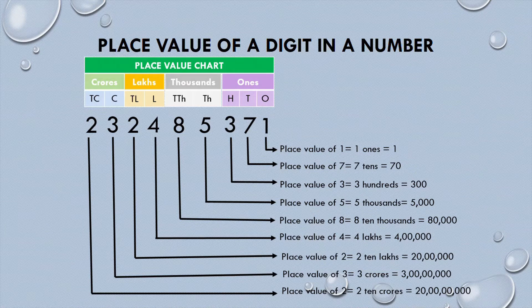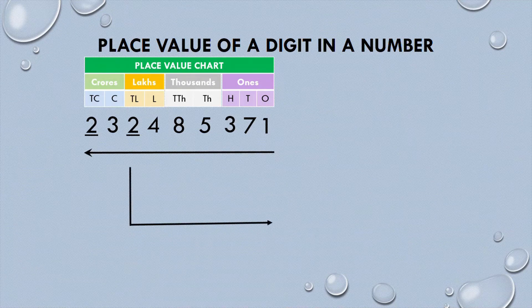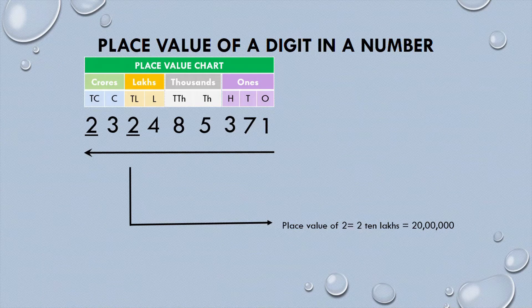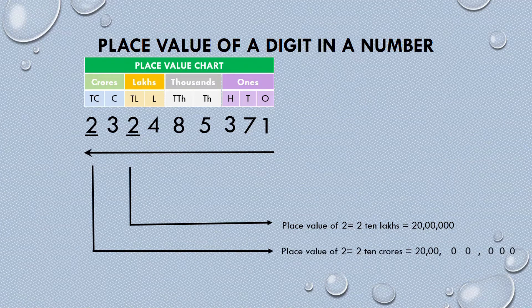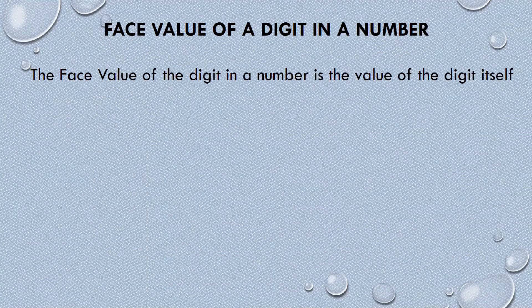Have you noticed that the digit 2 appears two times in this number? So what will be the place value of both these digits 2? After placing the numbers in the place value chart from right to left, the first digit 2 occupies the ten lakh position in the lakhs period — so its place value is twenty lakh. The second digit 2 occupies the ten crore position in the crores period — so its place value is twenty crore.